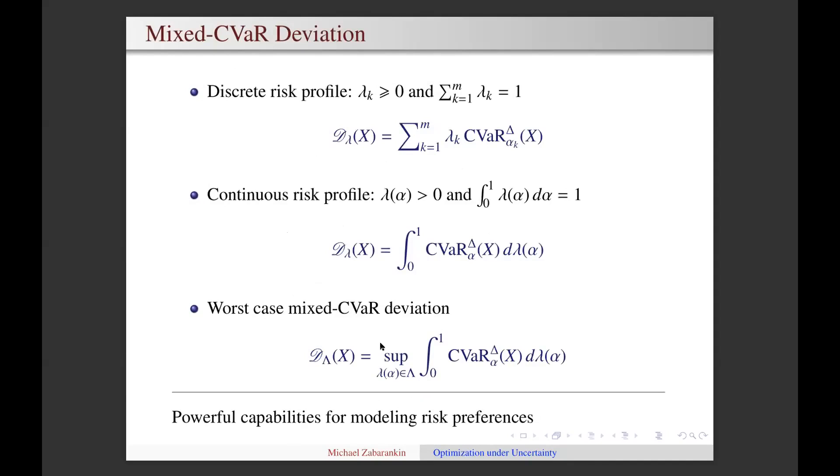In fact, CVaR deviation can be used as a building block for constructing more sophisticated deviation measures. For example, a linear combination of CVaR deviations with different alpha levels is called mixed CVaR deviation, where lambdas are regarded as a discrete risk profile. Or we can integrate CVaR deviation with some weighting function lambda of alpha, which in this case is referred to as continuous risk profile and can be linked to a dual utility function.